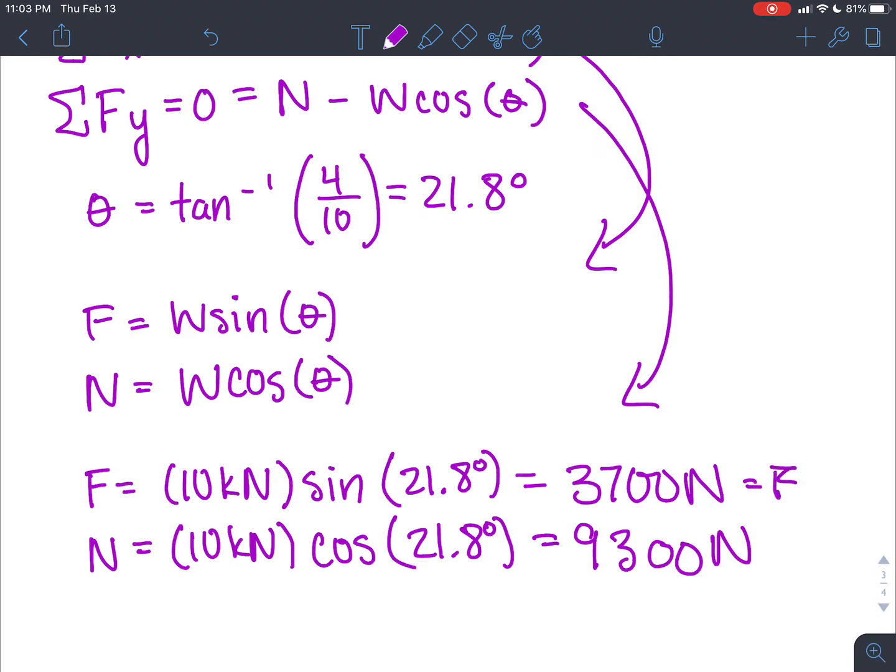And again, we can rewrite those components over here. We can even add back in our arrow notations. And so those are our final answers. So now we know the values of all of the forces that are acting on that car. So the friction, which is acting upwards up the ramp, is this 3,700. And the normal force, which is acting perpendicular to the ramp, is the 9,300 newtons. And that's how you solve that problem.